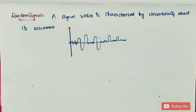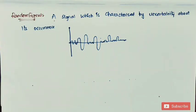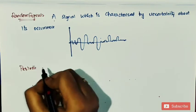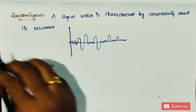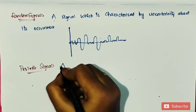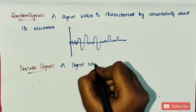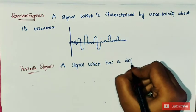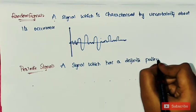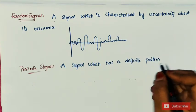This is about deterministic and random signals. The next type of classification is periodic and non-periodic. This is the most common word that we use in our daily life. A periodic signal is nothing but a signal which has a definite pattern and repeats itself at regular intervals of time.